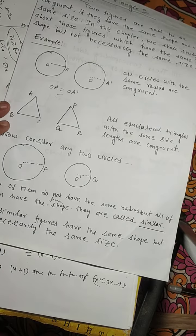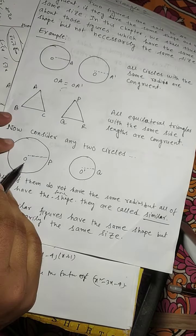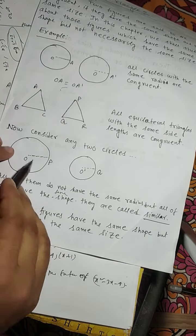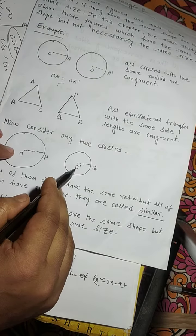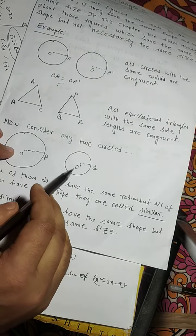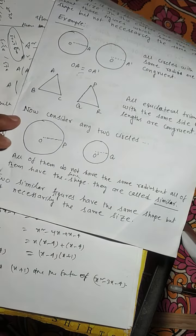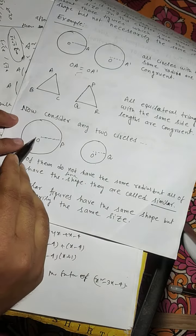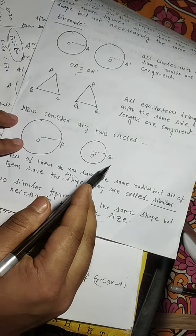Now consider two circles. O is the center with radius OP, and O' is the center with radius O'Q. Here they do not have the same radius. OP is not equal to O'Q.